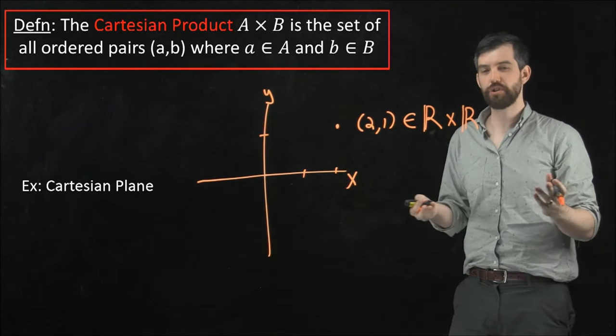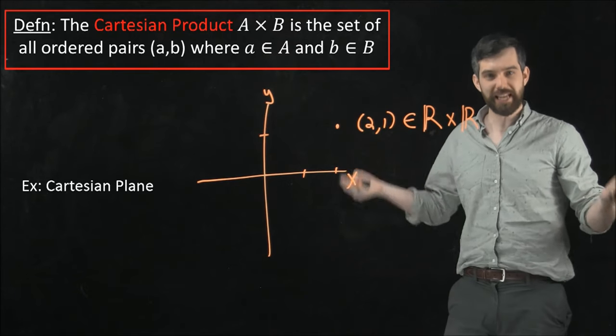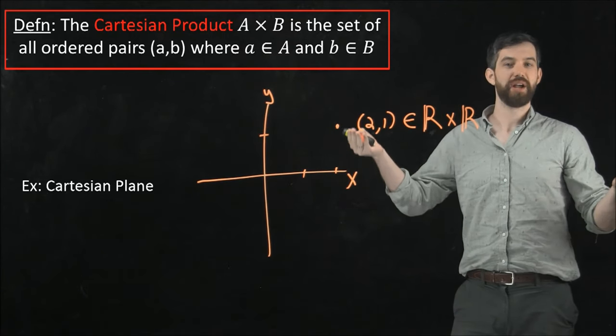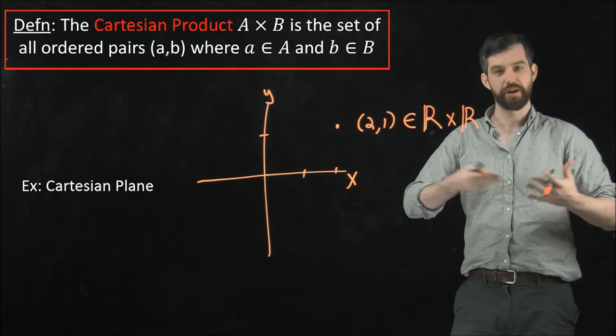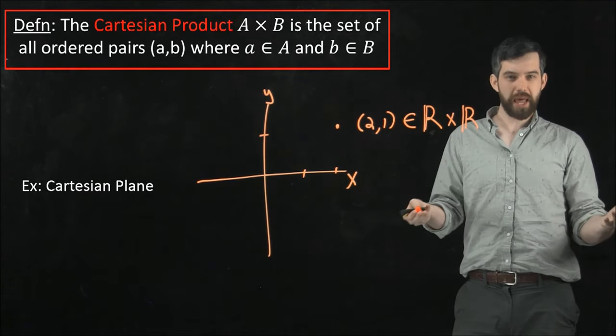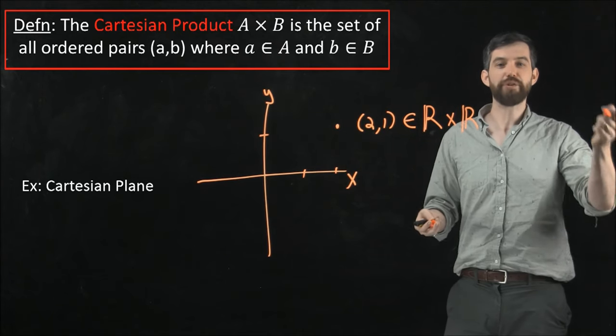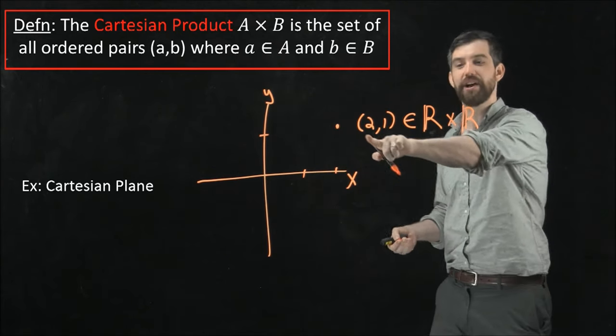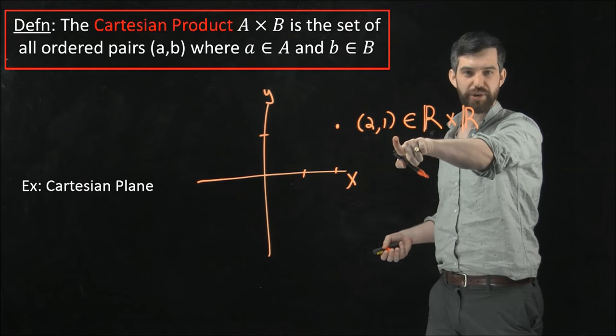And then if I ask what R cross R is itself, that's going to be the Cartesian product. But what it represents is the entire real plane, or the entire Cartesian plane. In other words, the Cartesian plane is going to be every possible pairing where I tell you the x-coordinate, and then I tell you the y-coordinate.